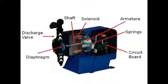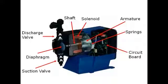When the solenoid is de-energized by the circuit board, the magnetic field collapses. The diaphragm and the armature return to the original position under the force of the springs. This action draws the fluid into the suction valve, and the cycle repeats.